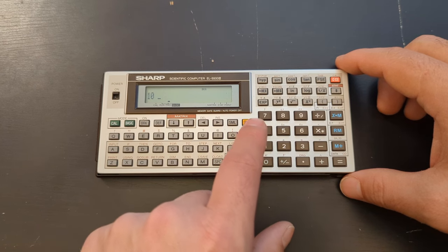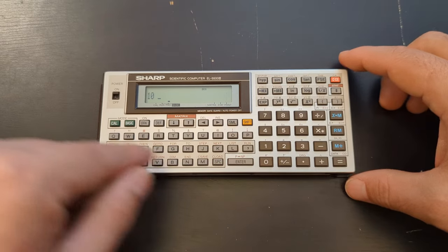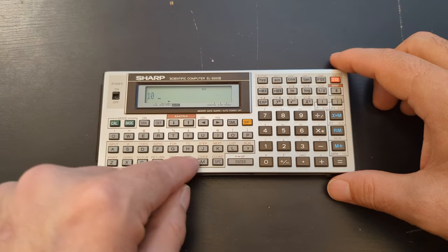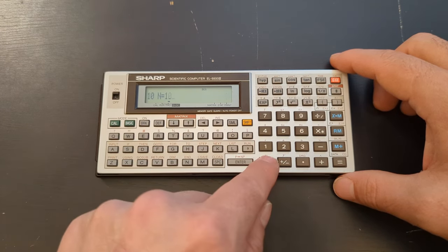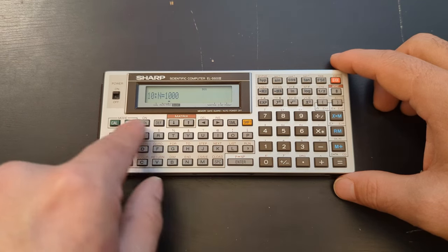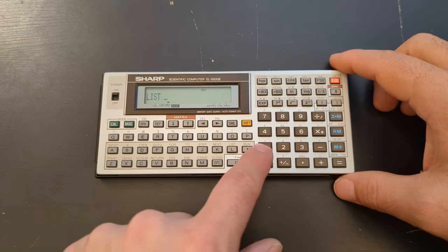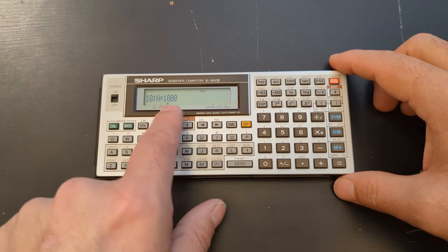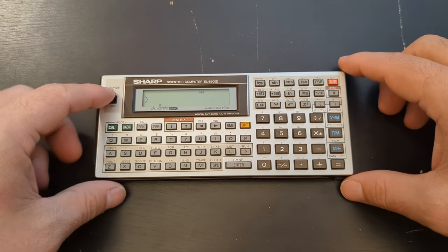I'm sure you get used to it after a while. The shift button is all the way up here which is also kind of hidden in there. Yeah what are we doing, n equals and then we're going to go up to 1000. And then we can quickly...